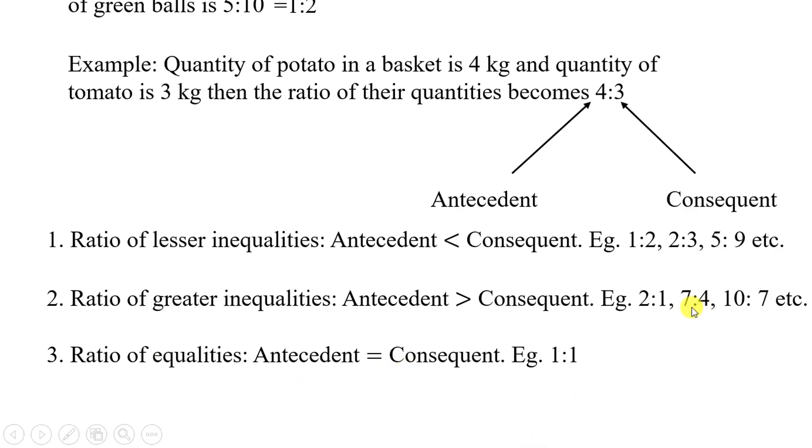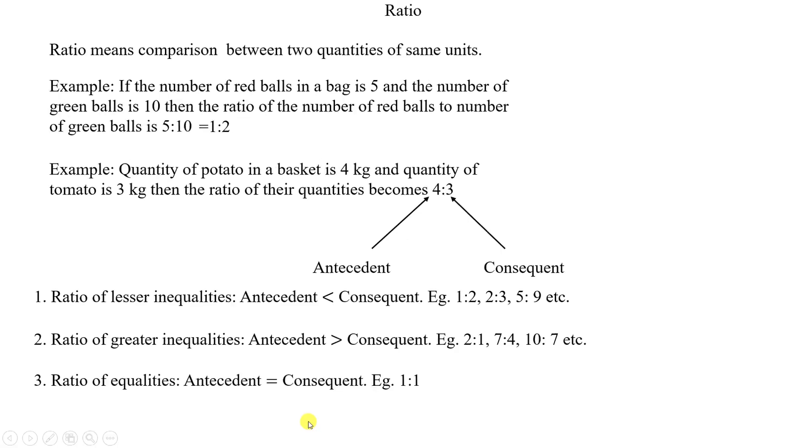Or another is ratio of equalities where antecedent and consequent are equal. Antecedent and consequent equal, and the simplest ratio is 1:1.